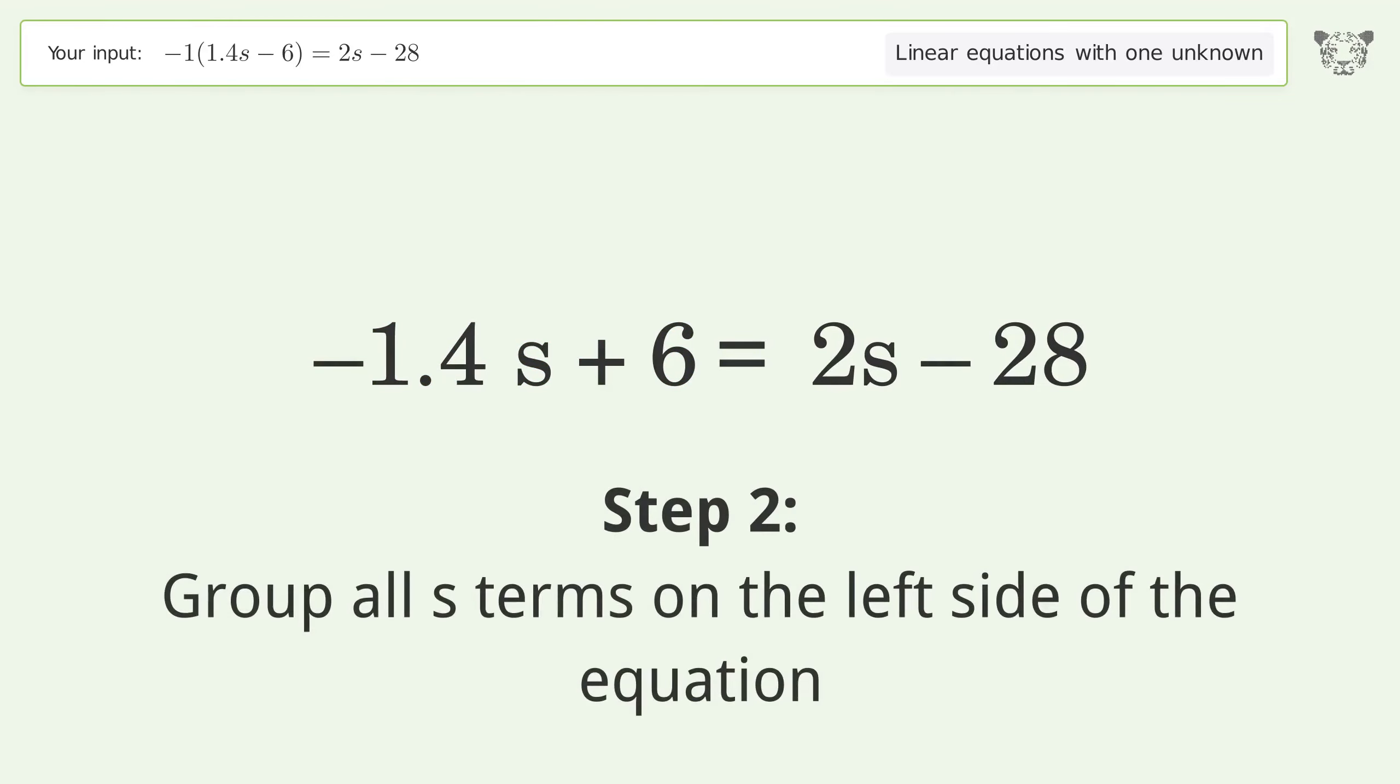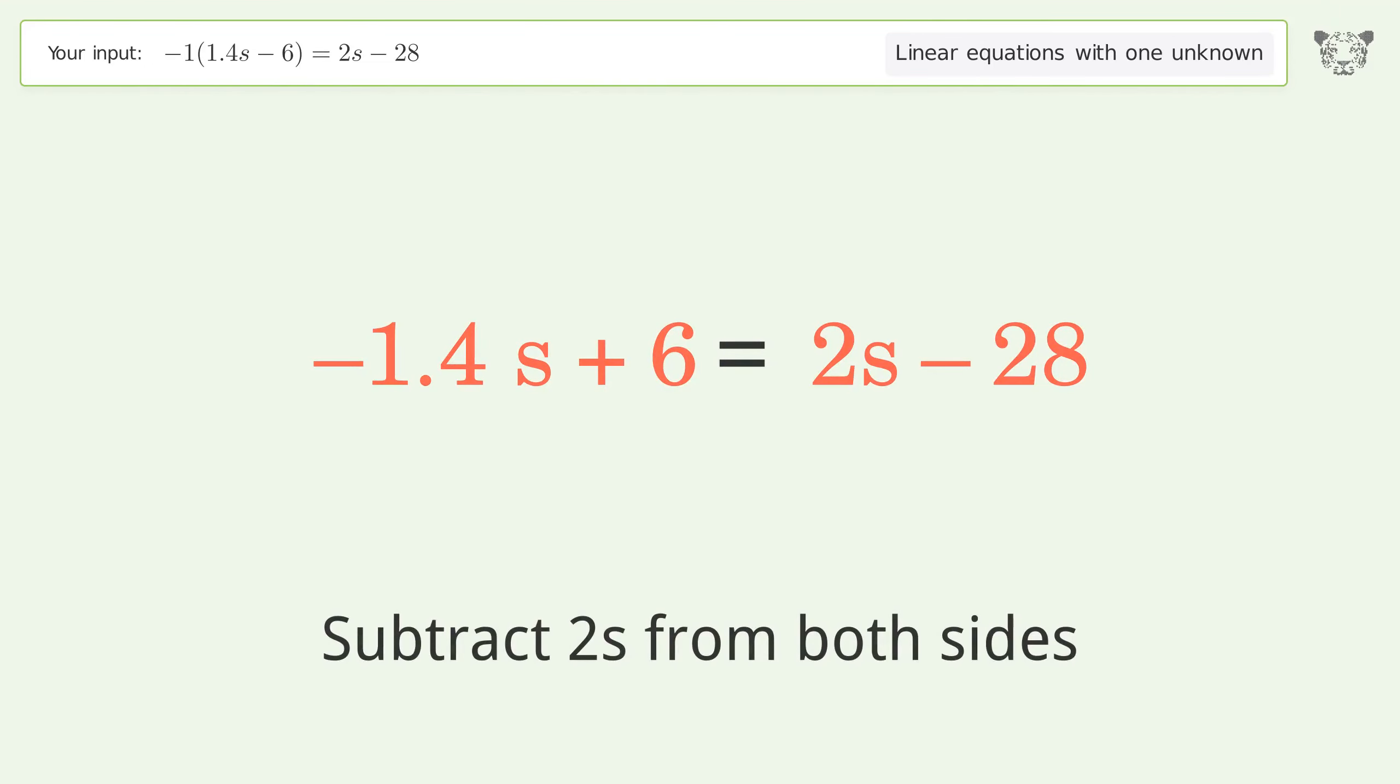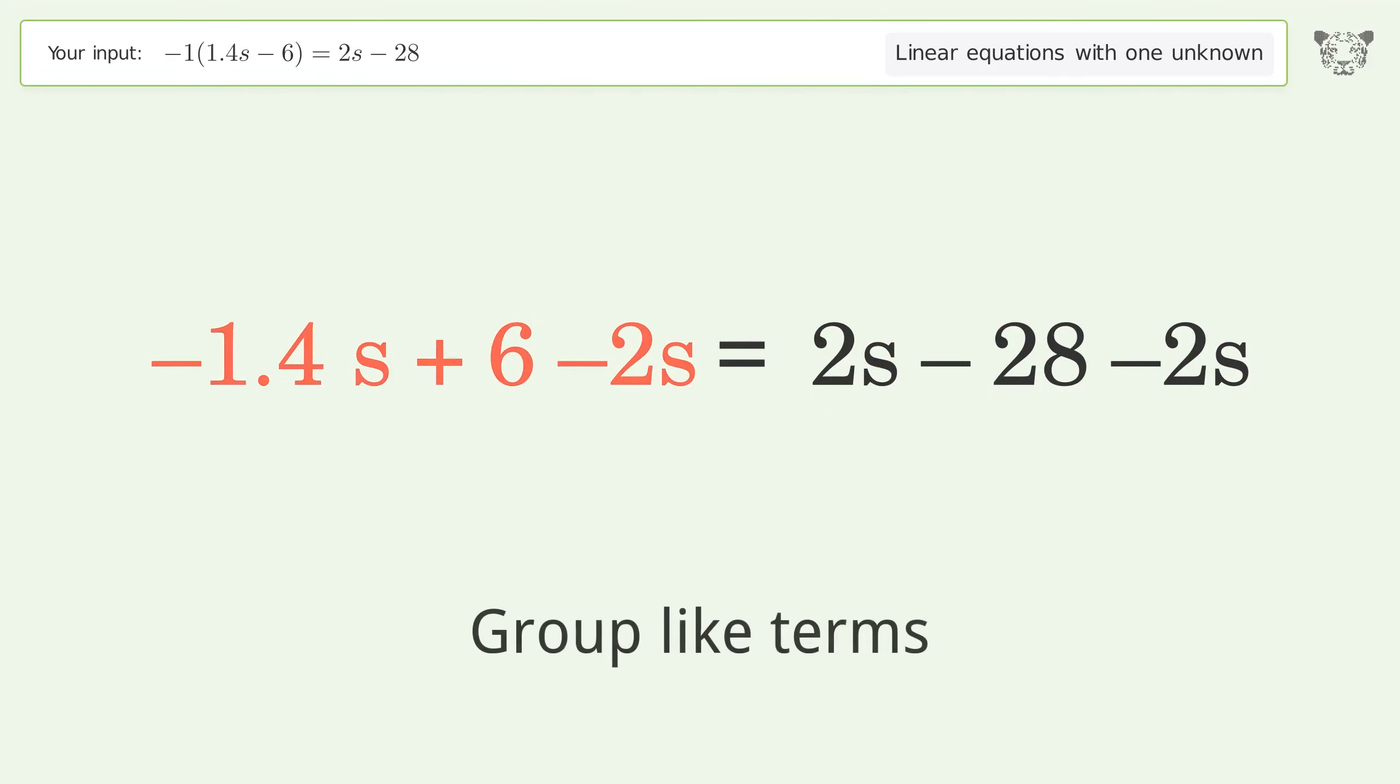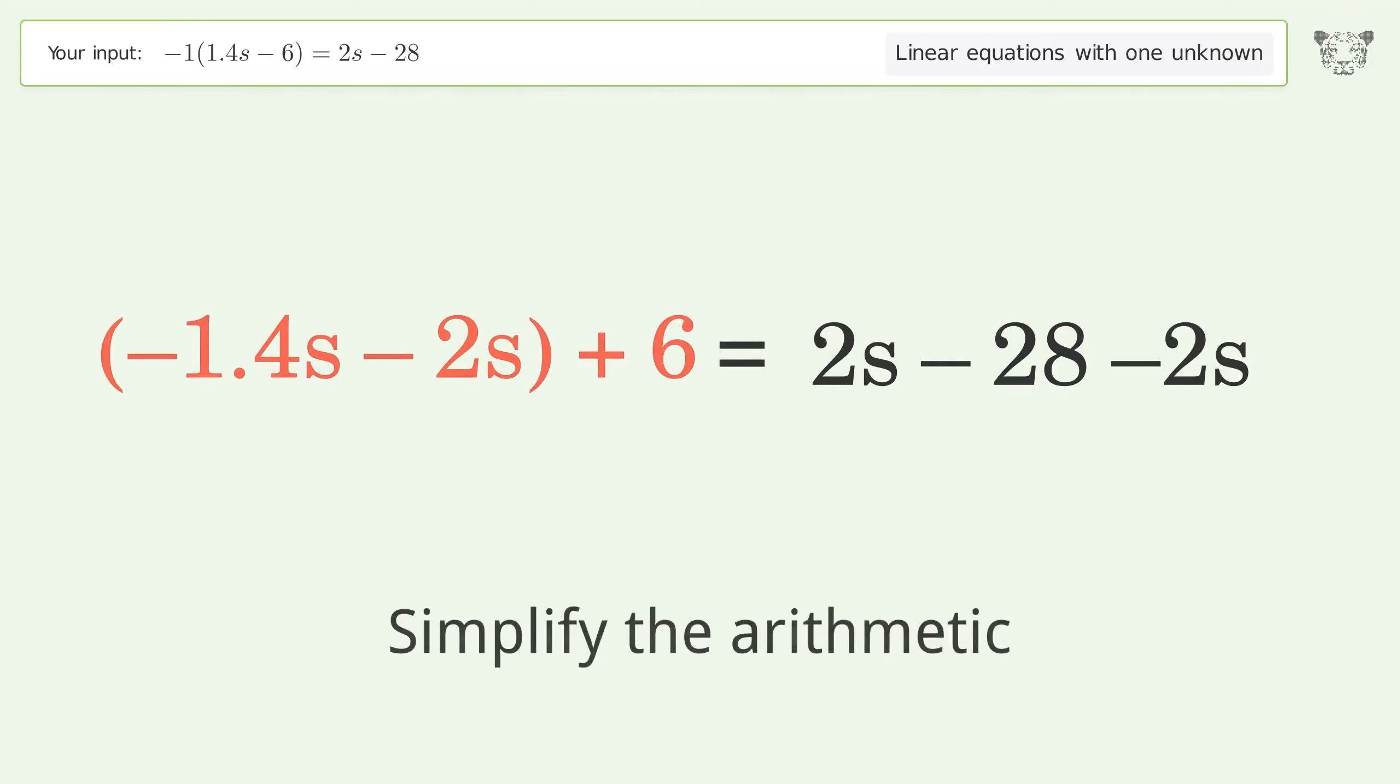Group all s terms on the left side of the equation by subtracting 2s from both sides. Group like terms, then simplify the arithmetic.